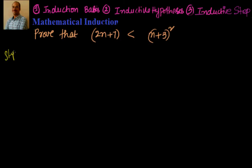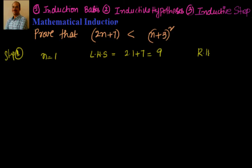First step, we have to prove that the statement holds good for n equal to 1. If I put n equal to 1, LHS is equal to 2 into 1 plus 7, that is nothing but equal to 9. RHS is equal to n plus 3 whole square, that is 1 plus 3 whole square, that is equal to 16. We know that 9 is less than 16.